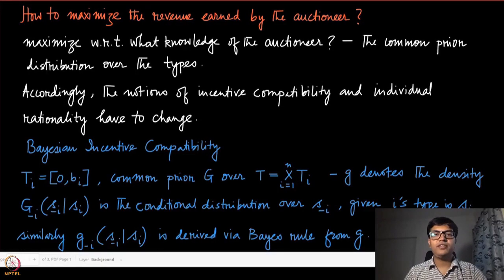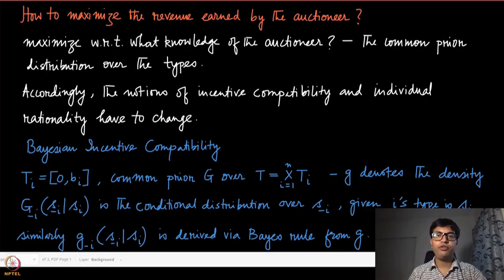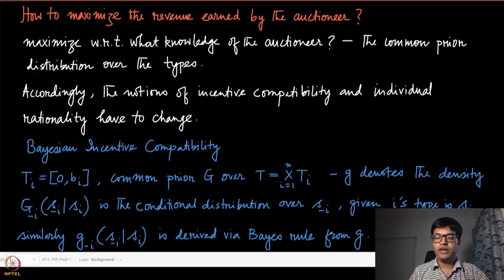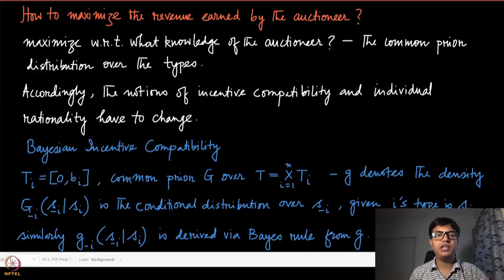Now we are going to address a very important question from the point of view of the auctioneer: how to maximize the revenue. So far we have only discussed truthfulness, but now we not only want to reveal information truthfully but also want to maximize the payment made by all these agents.